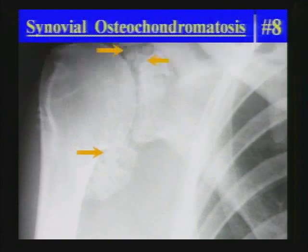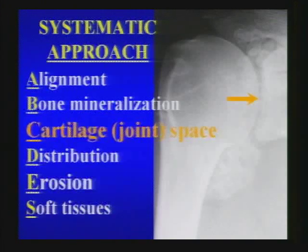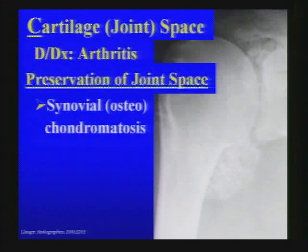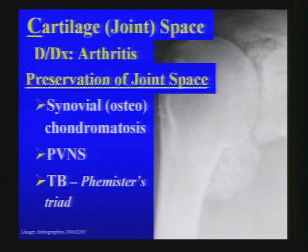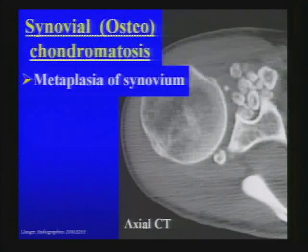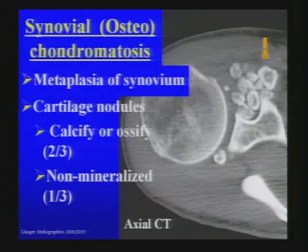Speaking of the shoulder — synovial osteochondromatosis. In our systematic approach, we analyze the cartilage or joint space. With most arthritides, the joint space ends up narrowed. But when there is preservation of the joint space, we have a short list: synovial osteochondromatosis, PVNS, and TB with Phemister's triad. With synovial osteochondromatosis, metaplasia of the synovium results in cartilage nodules in the joint. About two-thirds calcify or ossify and are visible on X-ray or CT.